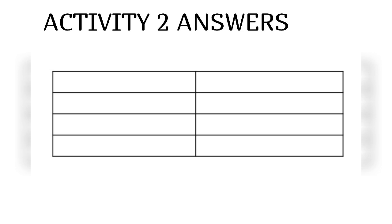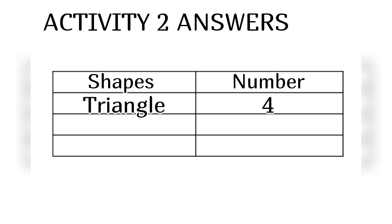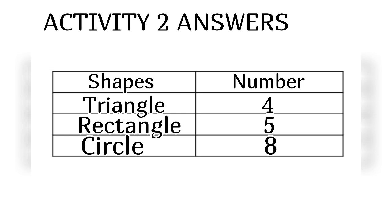Activity 2 Answers. A. Complete the table: Triangle - 4, Rectangle - 5, Circle - 8. B. Draw a figure using 3 triangles, 4 rectangles, and 2 circles. You can draw the figure according to your imagination.